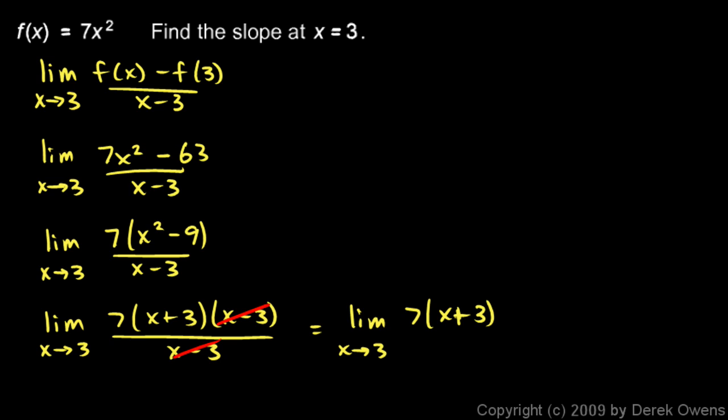And now it's obvious at this point. As x gets really close to 3, x plus 3 gets really close to 6. And so 7 times that will get really close to 42. And 42 is our answer.